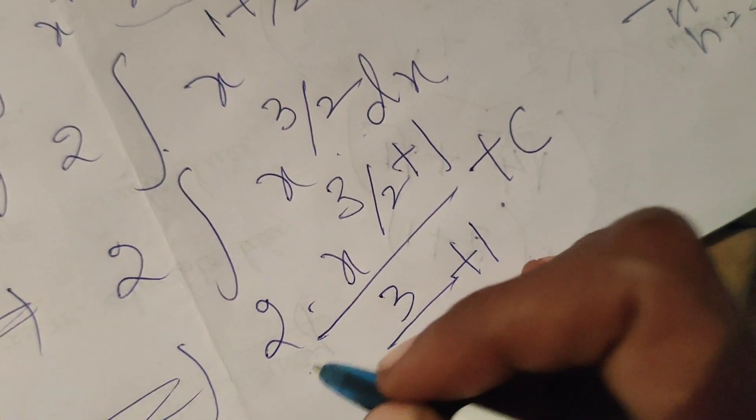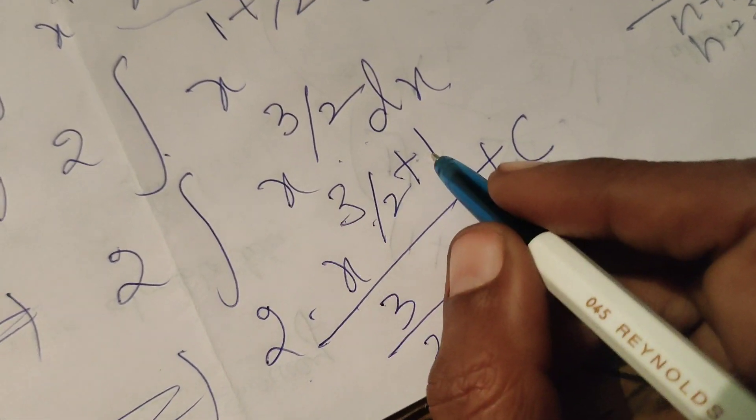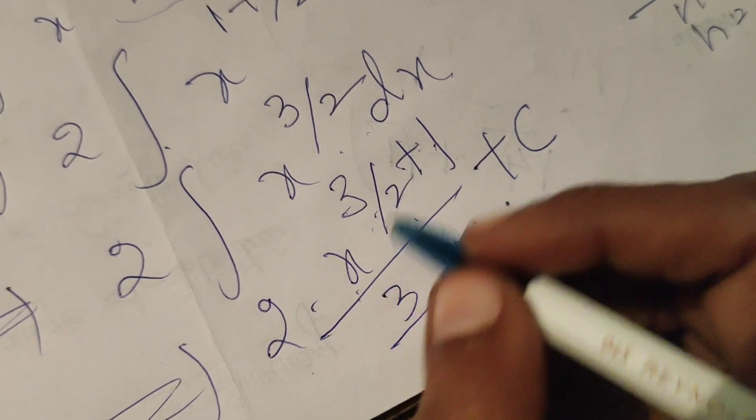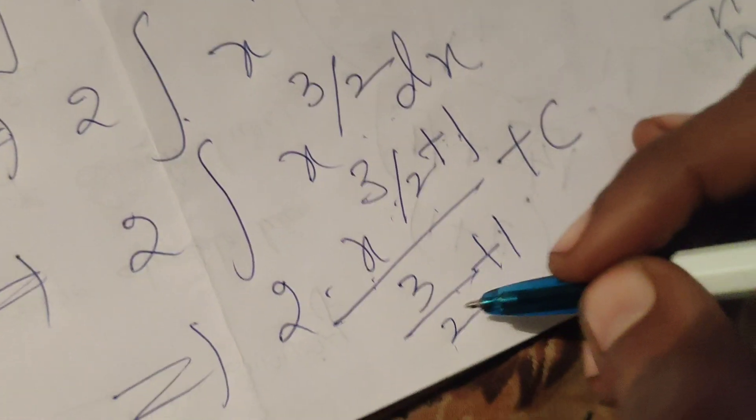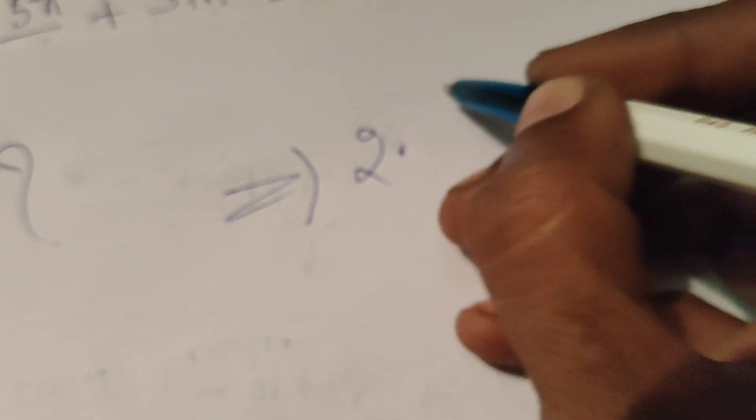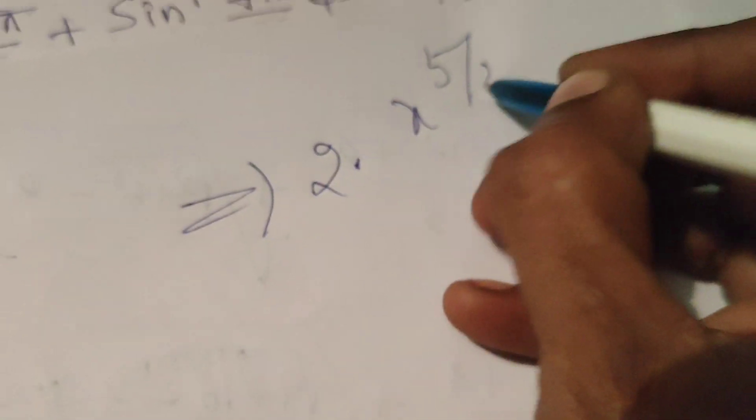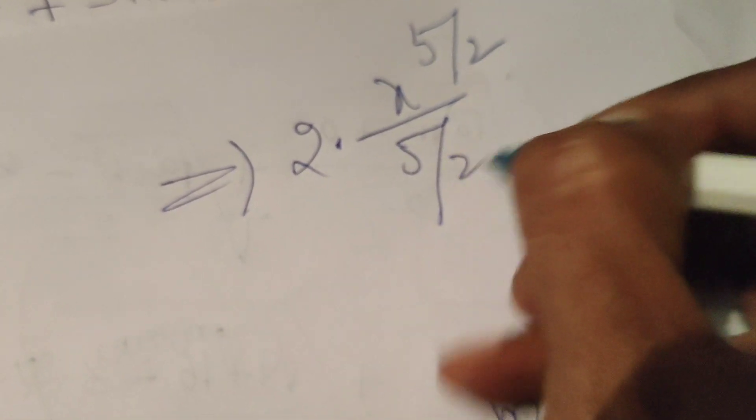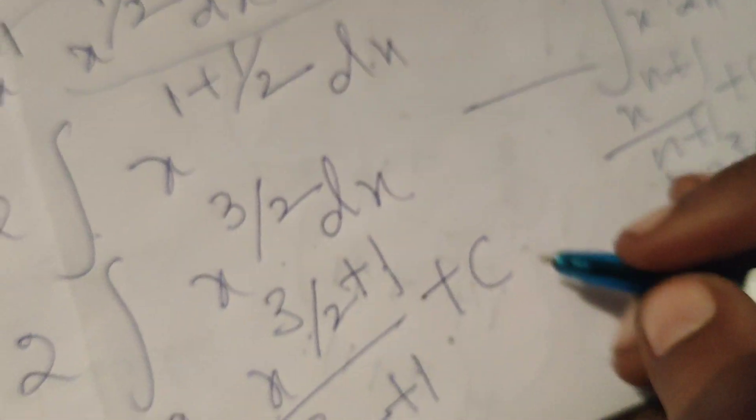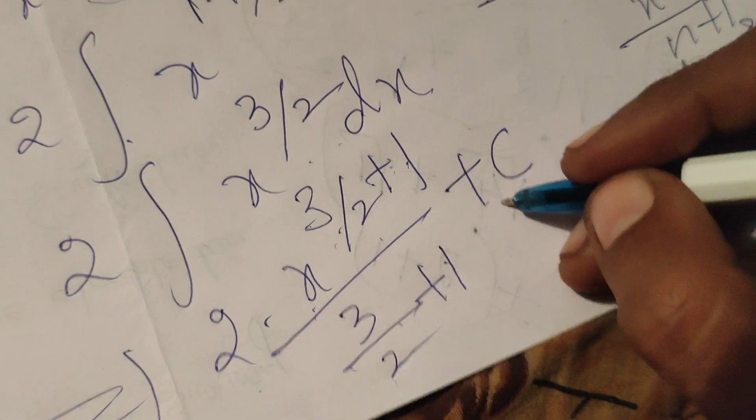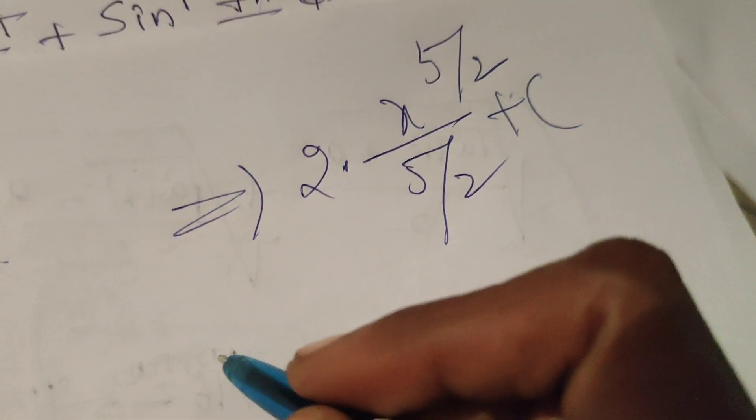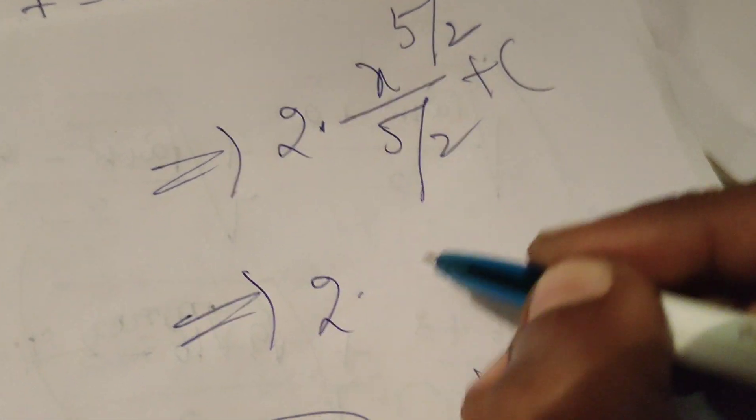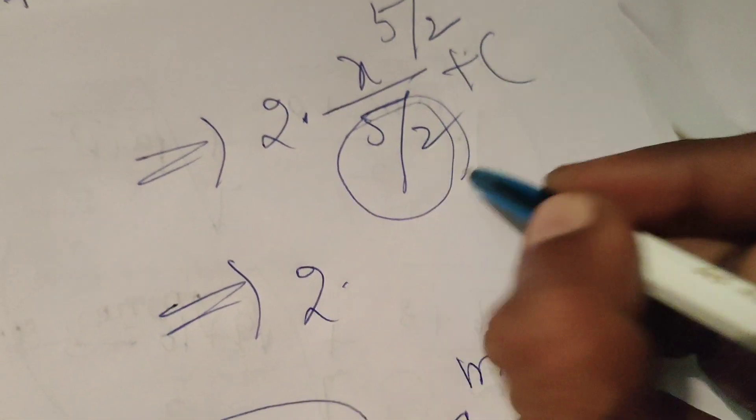This is 2 into x power 3 plus 2 into x power 5 by 2 by 5 by 2. Therefore here 2 into x power 5 by 2 by 5 by 2 plus C. After integration adding the constant C here that implies 2 into x power 5 by 2. Here denominator 5 by 2.